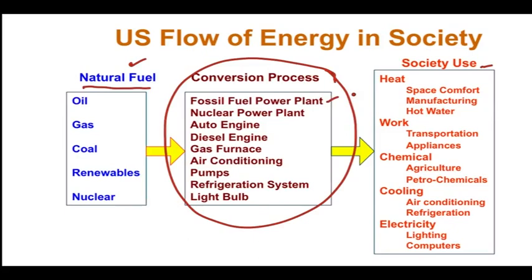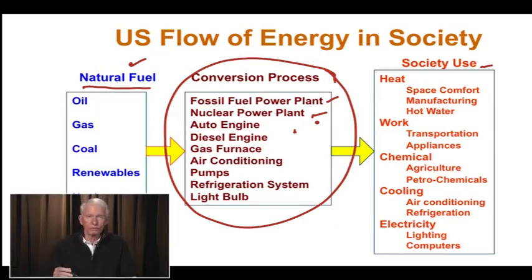These include fossil fuel power plants like coal power plants, natural gas power plants, and nuclear power plants. The auto engine converts gasoline that comes directly from oil, and the diesel engine takes diesel fuel that comes directly from oil, on essentially a one-to-one energy basis, and drives a car for transportation, which is in the work form. Natural gas furnaces heat our homes, air conditioning keeps our homes cool, and pumps pump water from wells into our bathrooms and kitchens.